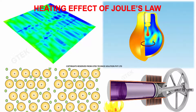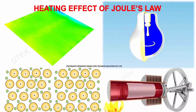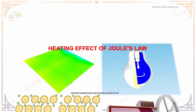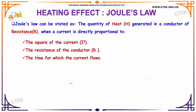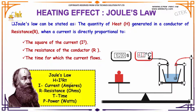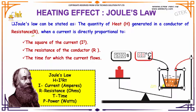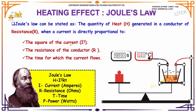Now, we are into the most interesting area — that's Joule's law. So, what do we mean by Joule's law? Joule's law can be stated as: the quantity of heat H generated in a conductor of resistance R, when a current flows, is directly proportional to the square of the current I², the resistance R, and the time T for which the current flows. That is H = I² × R × T, and that's referred to as Joule's law.